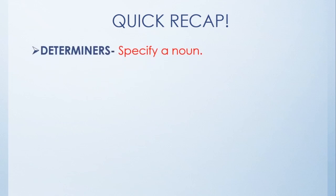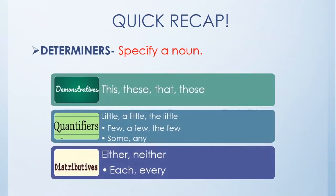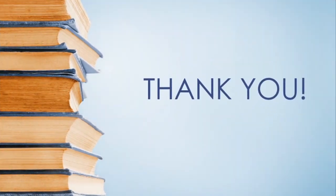So students, let's have a quick recap of what we learned about determiners. Determiners specify a noun. We learned about demonstratives — this, these, that, those; quantifiers — little, a little, the little, few, a few, the few, some, any; and distributives — either, neither, each. We come to the end of this video session.